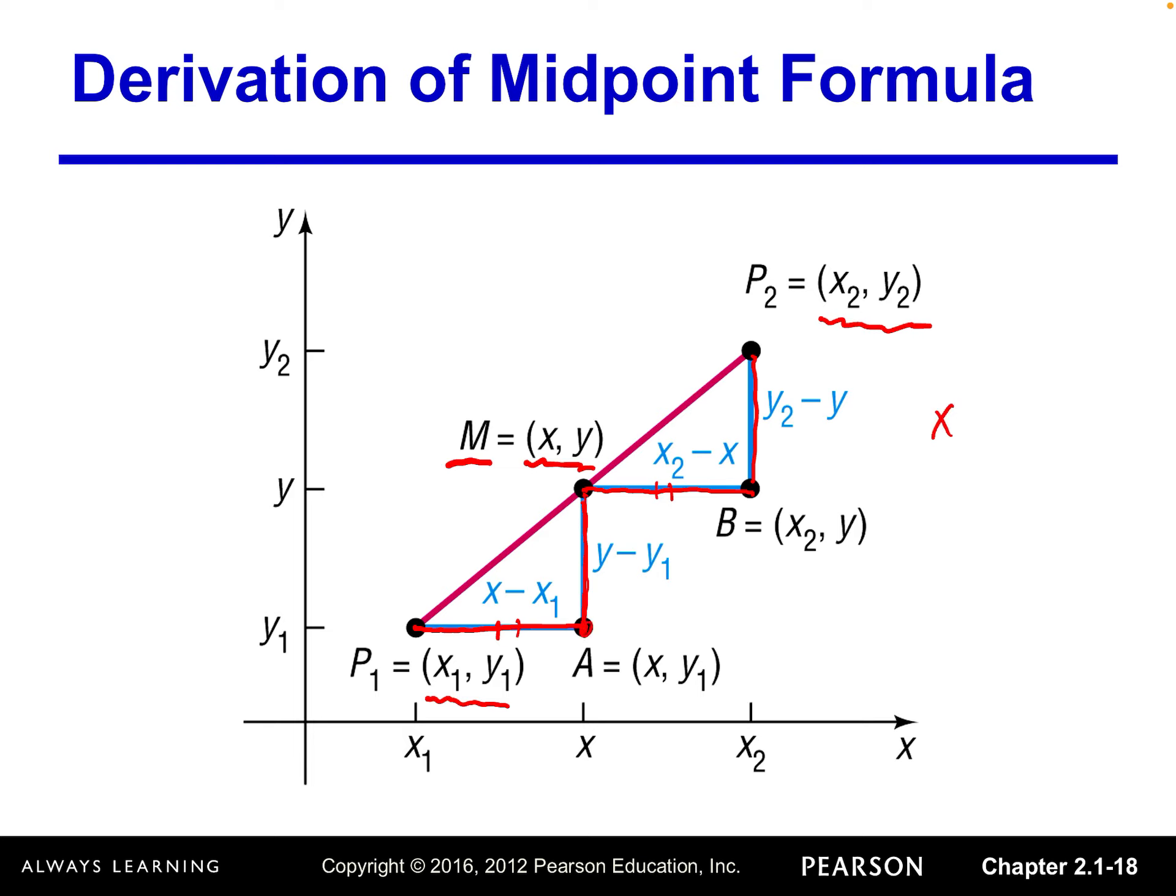So this point A should have the same X coordinate as the midpoint because this is a vertical line. And then should have the same Y coordinate as P1. So that's why point A with coordinates X, Y1.